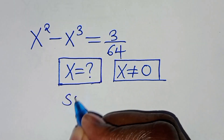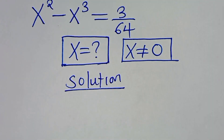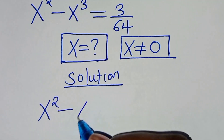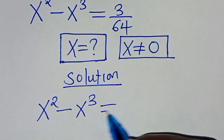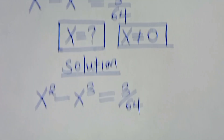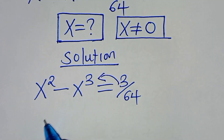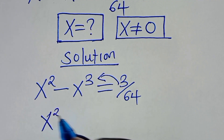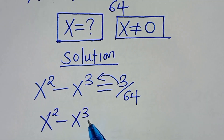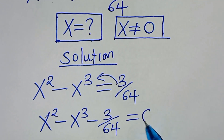So, let's present the solution. We have x to the power of 2 minus x to the power of 3, this is equal to 3 over 64. Let's take 3 over 64 to the left hand side, so that we have x to the power of 2 minus x to the power of 3, subtract 3 over 64, this is equal to 0.